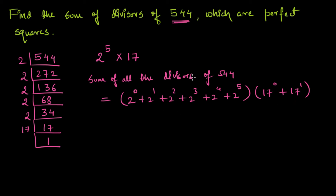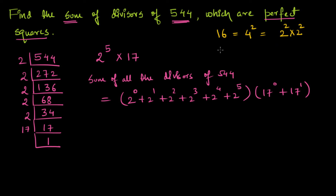This result gives the sum of all divisors of 544, but we want only those divisors which are perfect squares. For example, 16 is a perfect square because 4² = 16. If we prime factorize 16, we get 2² × 2² = 2⁴. Another example: 36 = 6 × 6 = 2² × 3².